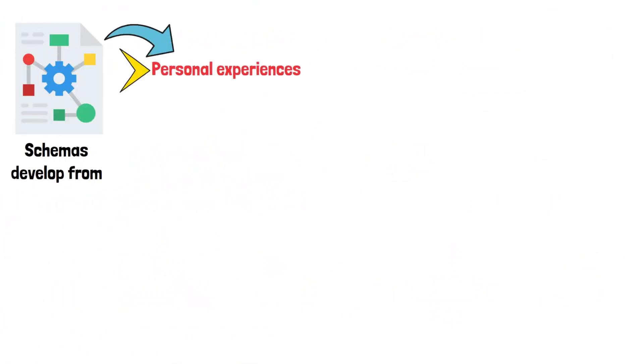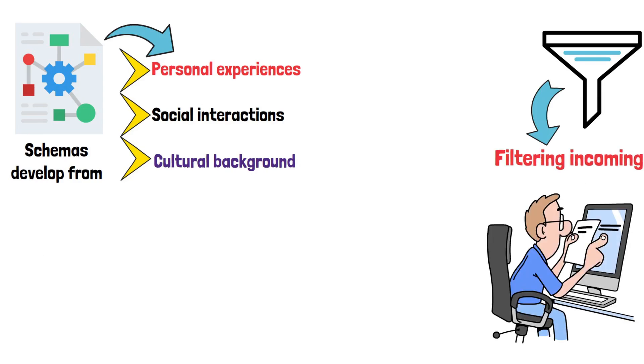Schemas develop from personal experiences, social interactions, and cultural background. They function by filtering incoming information based on what we already know, shaping perception and memory.